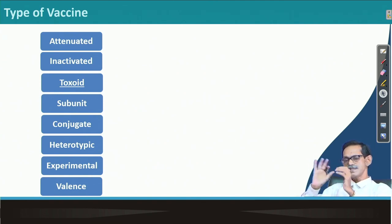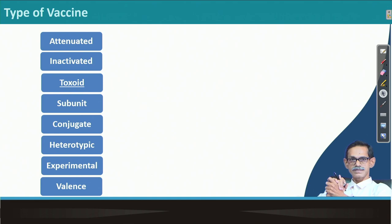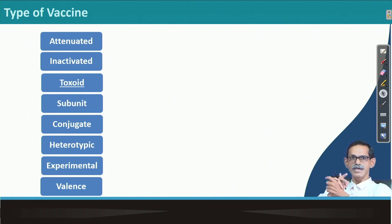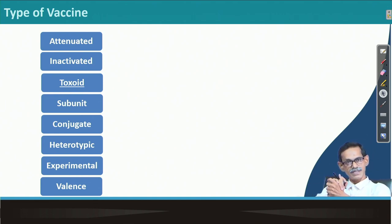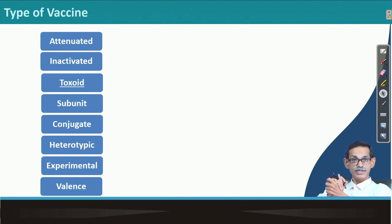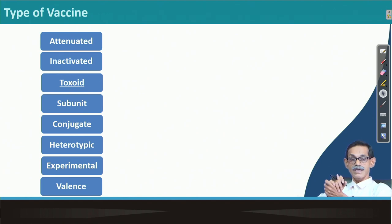There are various types of vaccines. If you see: attenuated, inactivated, toxoid, subunit vaccine, conjugate vaccine, heterotypic vaccine — and there are a series of experimental vaccines. Experimental means different types of vaccines which are now under experimentation and not yet finalized. People are also trying to develop new kinds of vaccines. There is also another type called valence.